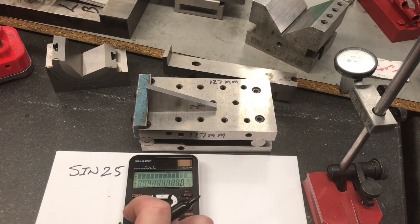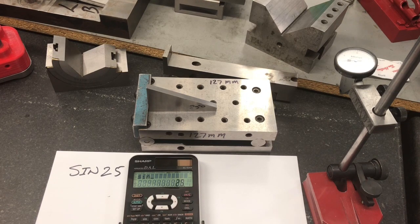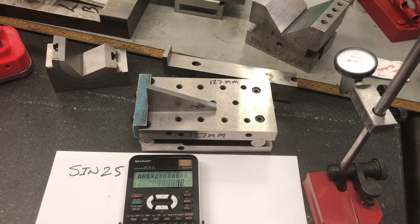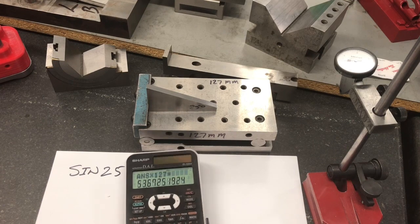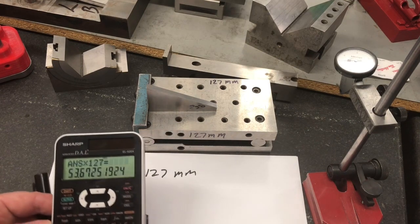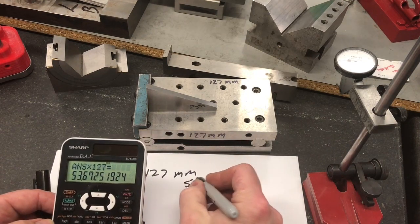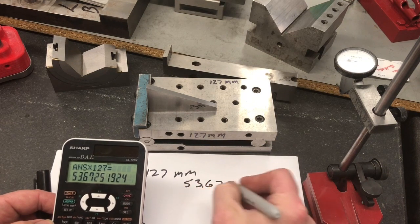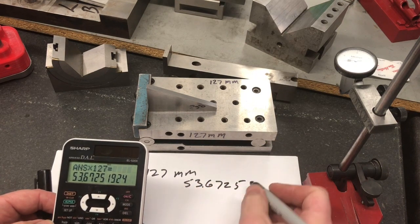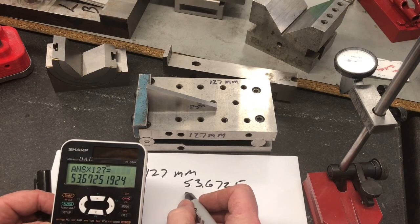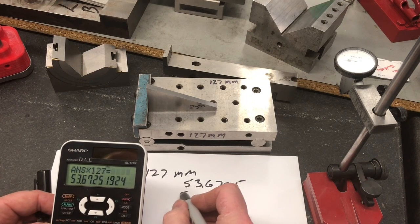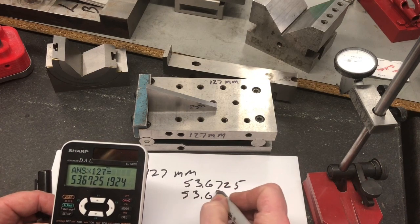Sine 25 equals times 127 equals 53.6725. So we're actually going to do a sine bar build up of 53.67.